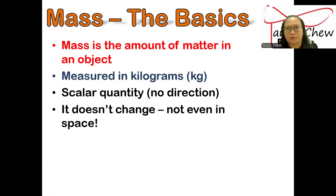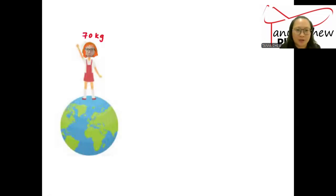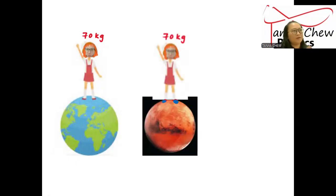No matter where you are, whether you are on the surface of the Earth, whether you go to the surface of Jupiter, whether you are on the surface of the Moon or Mars, your mass will always stay the same. Right, now look at me. That's me, 70 kilograms. I'm on the surface of the Earth. And even if you transfer me to the surface of Mars, my mass is still the same, 70 kilograms. Nothing has changed.